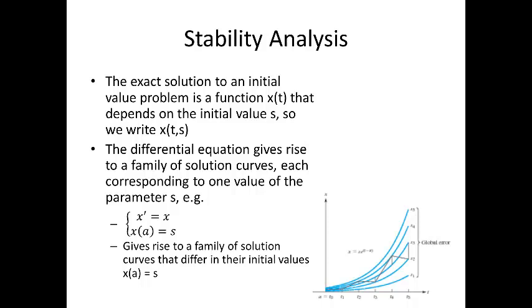So, the exact solution to an initial value problem is a function x of t that depends on the initial value s. So, we write x of t comma s. The differential equation gives rise to a family of solution curves, each corresponding to one of the values of the parameters. For example, x prime is equal to x, x of a is equal to s. It gives rise to a family of solution curves that differ in their initial values. x of a is equal to s. Few such curves are shown in the figure.